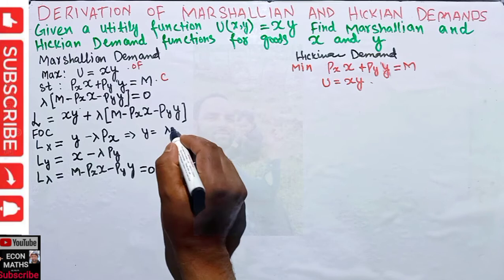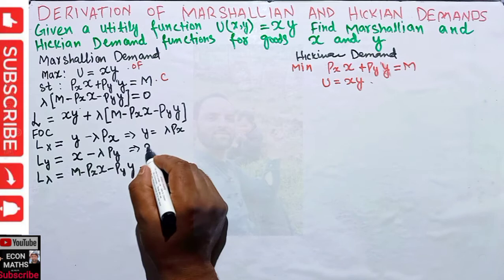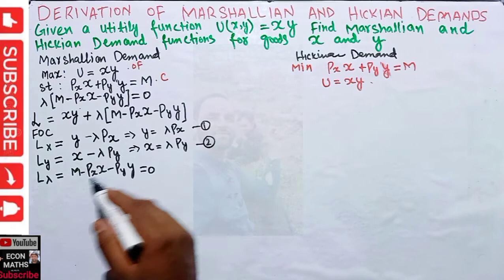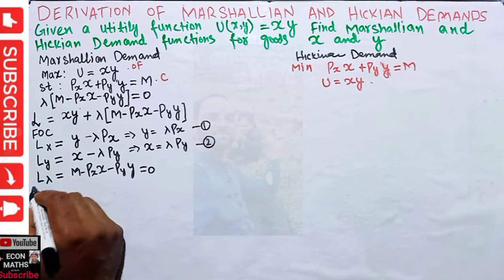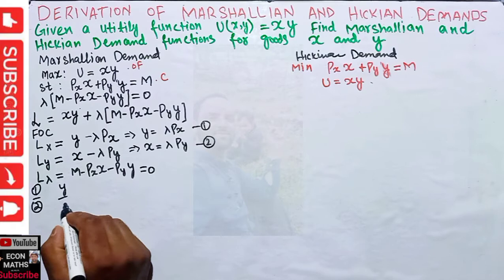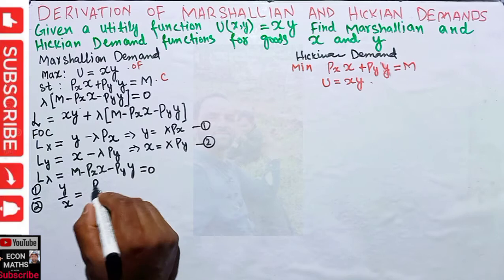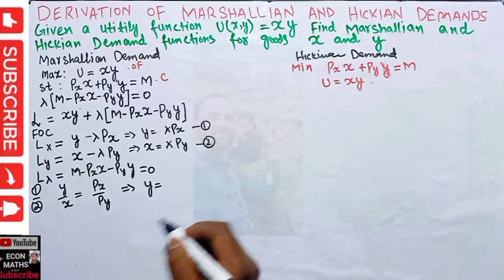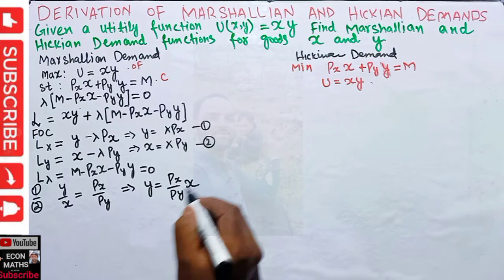From the first-order conditions, we get y = λPx (equation 1) and x = λPy (equation 2). Dividing equation 1 by equation 2, y/x = Px/Py. Solving for y gives: y = (Px/Py)·x.